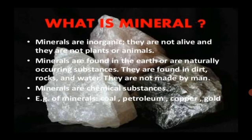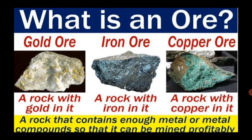Minerals are chemical substances. Examples of minerals include coal, petroleum, copper, gold, etc. Only a few metals like gold, silver, copper, and platinum occur in the free state in nature. The majority of metals occur in the form of compounds. Minerals that contain a high proportion of metal are called ores. It is economical to obtain metals from ores.